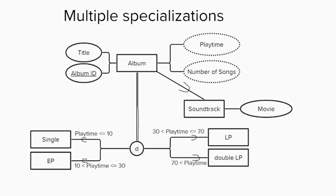It is also possible for an entity to have multiple distinct specializations corresponding to different categorizations. For example, in addition to categorizing some albums as soundtracks, a distinct question we can ask of all albums is whether it is a single, EP, LP, or double LP. The distinction between these terms is a bit fuzzy, and since their original definitions were partially related to the available storage space on vinyl records, their definition has become even more muddled in the era of digital music. However, for the sake of demonstrating the capabilities of the extended entity relationship model, let's pretend that these terms have strict definitions.